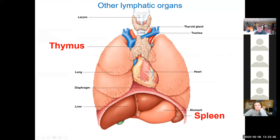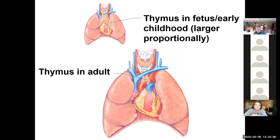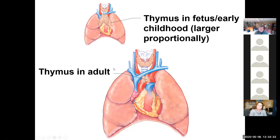You might remember seeing the spleen during the rat dissection — it's located lateral to the stomach and inferior to the diaphragm. What's quite interesting is that the thymus reaches its largest size proportionally when you are young. Here's the heart, lungs, and thymus in a youngster versus an adult — you can see how much smaller it is proportionally as you grow up.